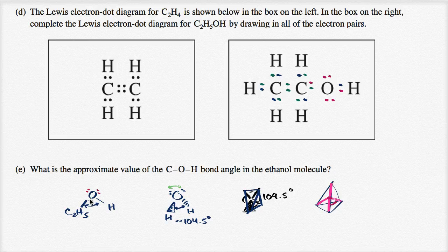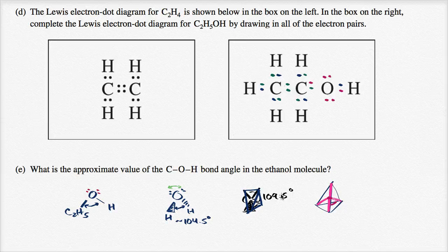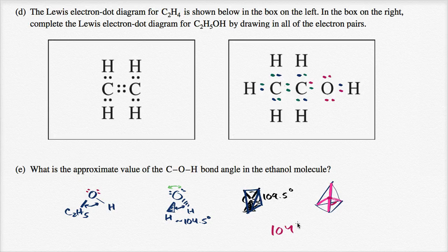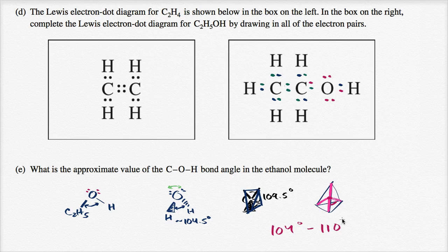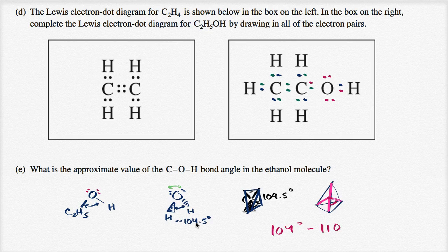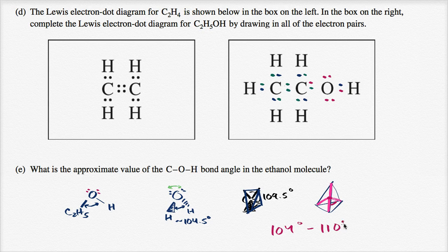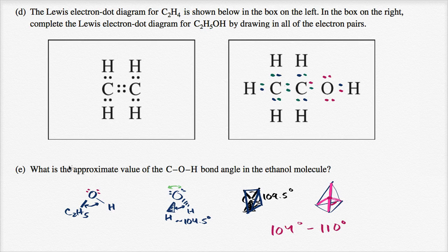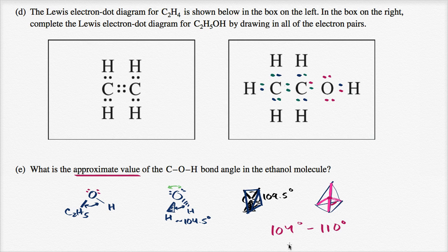So this is going to be tetrahedral, but you have these lone pairs that are gonna be repelling each other a little bit. So you're gonna be someplace in the neighborhood of around where water is, or a more pure tetrahedral shape. So I would say your bond angle is gonna be between 104 and 110 degrees. In fact, I would estimate that it's gonna be more than 104.5. They really just want us to approximate the value. So anything in this range would be a suitable answer.